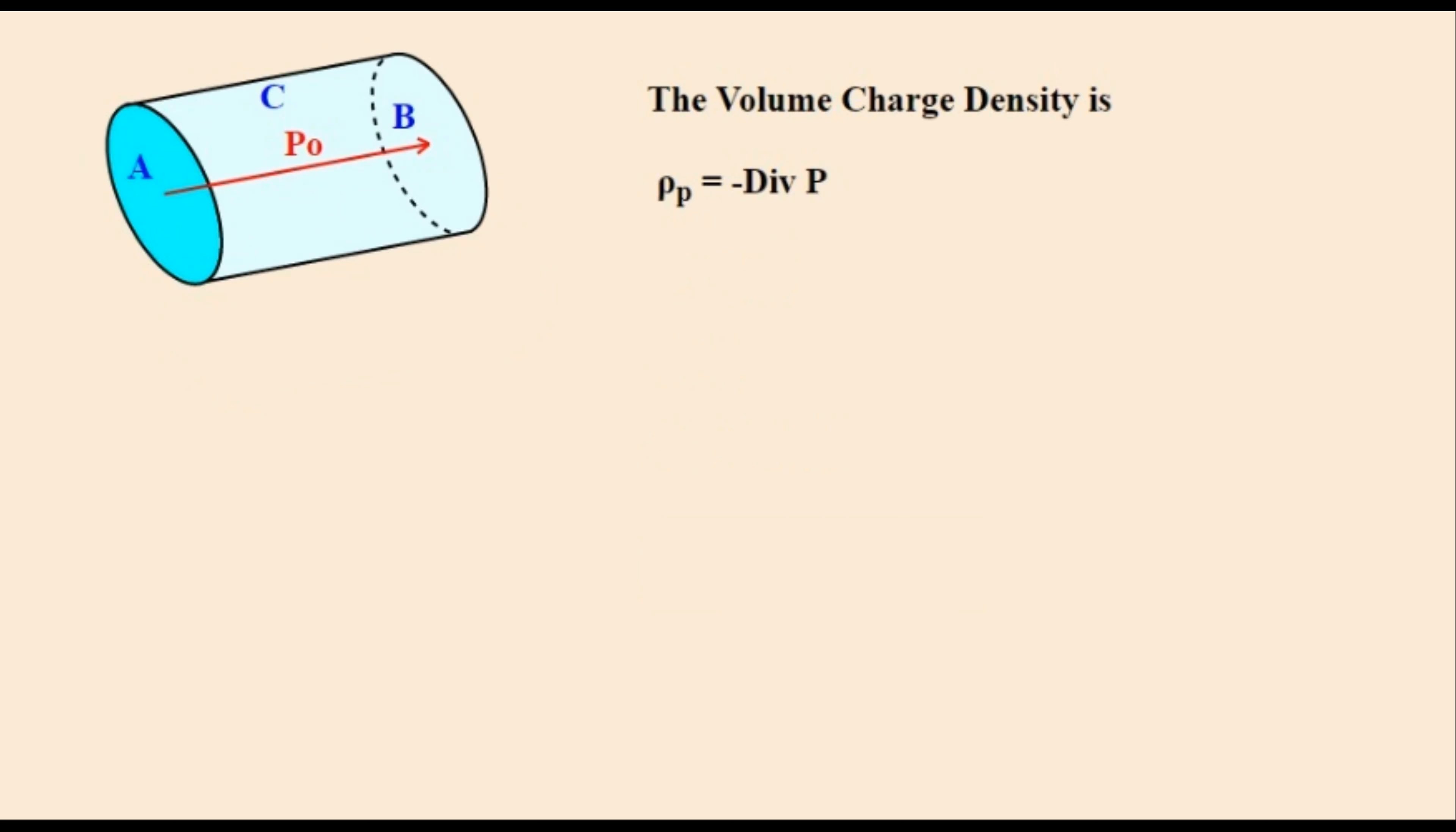To get the volume charge density we use the following equation. Substituting the value of P into it gives us this expression. And because P0 is constant in all of space then its divergence is 0.